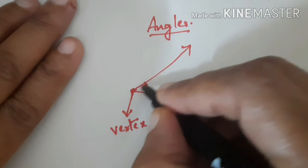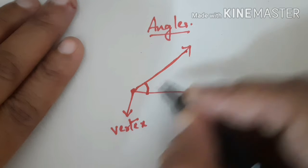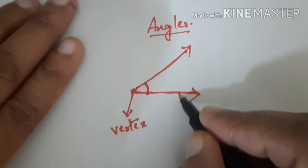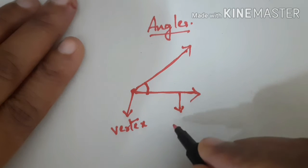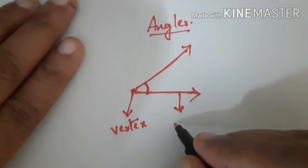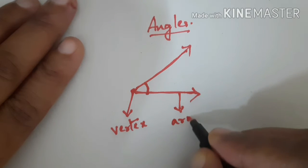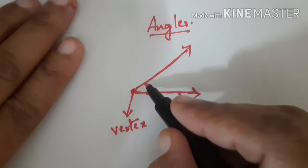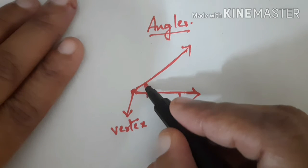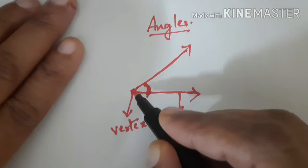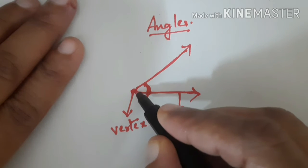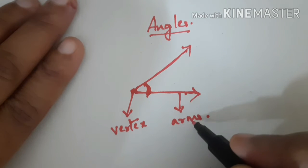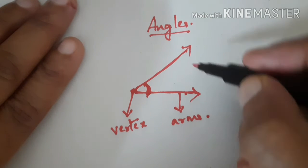Now see, in this angle these two rays are known as arms of the angle. So this is an angle formed here. This is the vertex and these two are the arms of the angle.